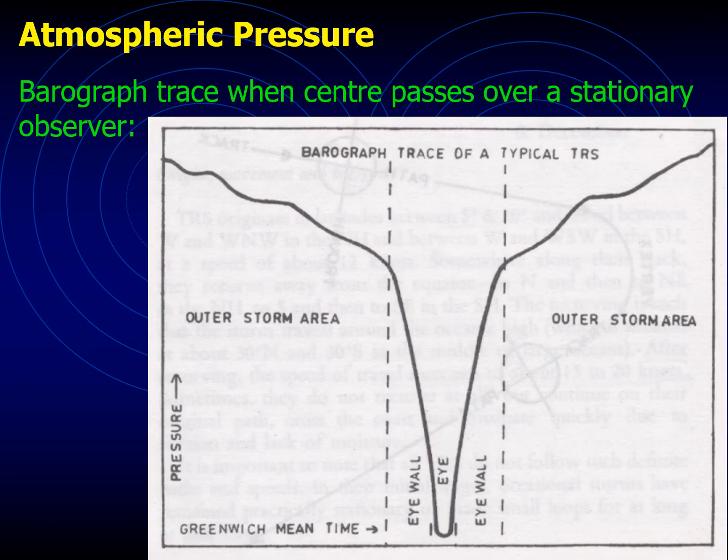Here is the barograph trace showing when a subtropical cyclone center passes over a stationary observer. As you can see, the pressure initially drops and then, once the TRS passes over, the pressure starts to rise again.